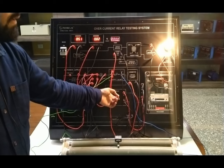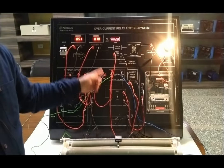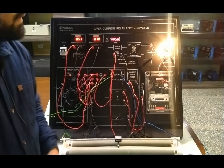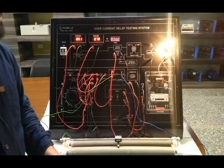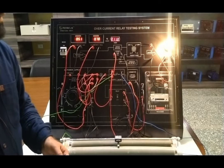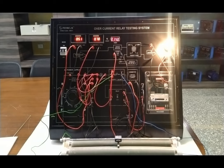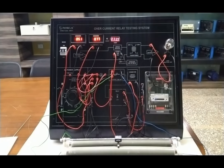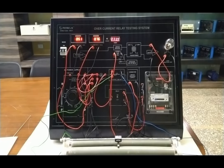We have provided overcurrent beyond the setting value. Now we will turn on the switch and see how much time the relay takes for tripping. As I turn on the relay, the current slightly drops and the relay is energized — it now starts rotating the disc, and the disc will trip the system in some time. The time will also be marked and stopped on the timer, giving us the accurate time for tripping the system.